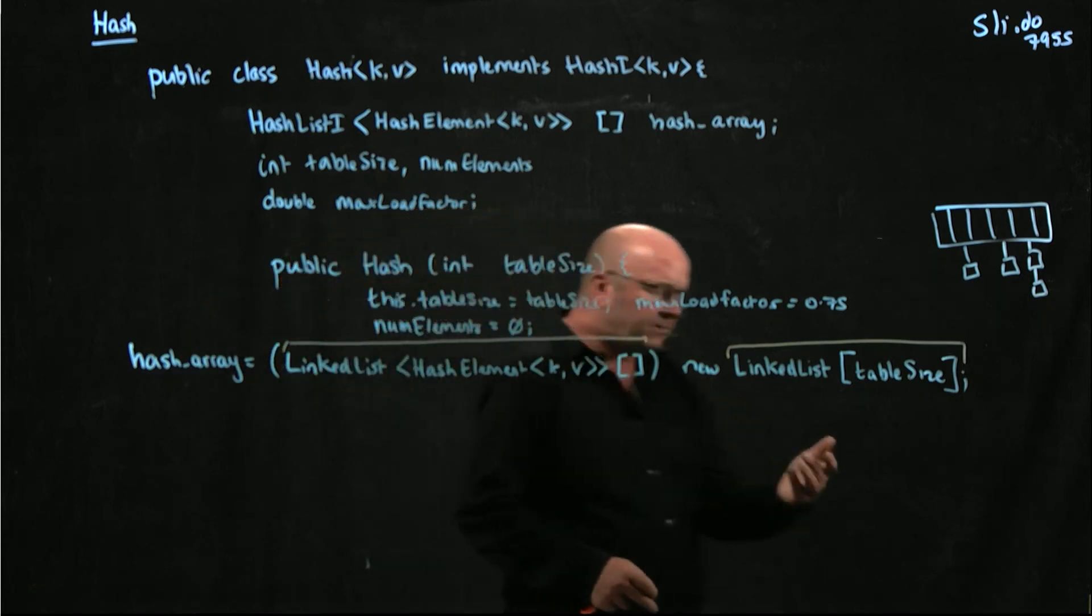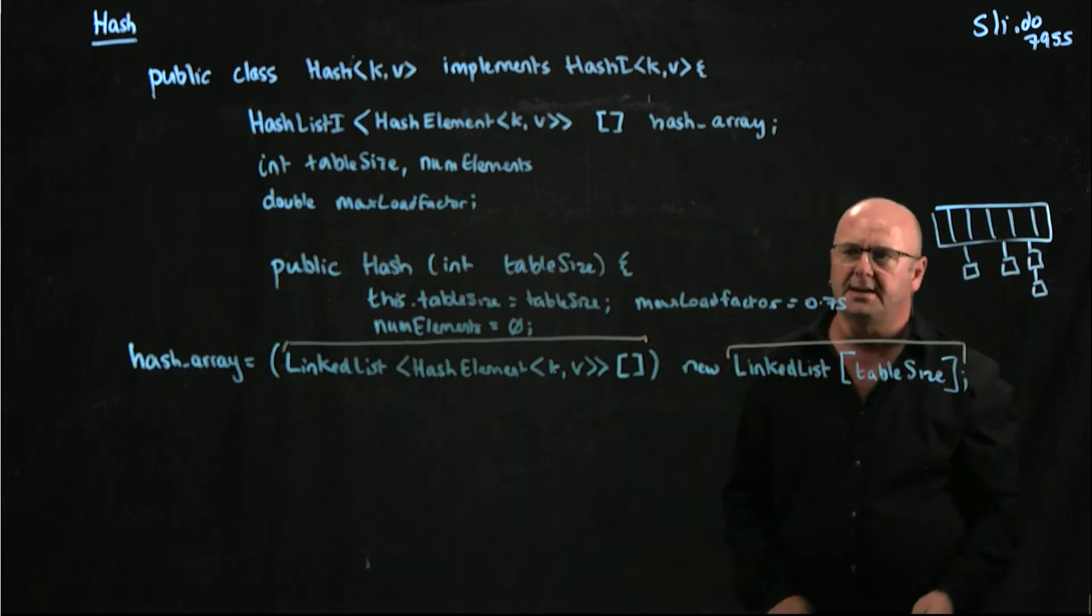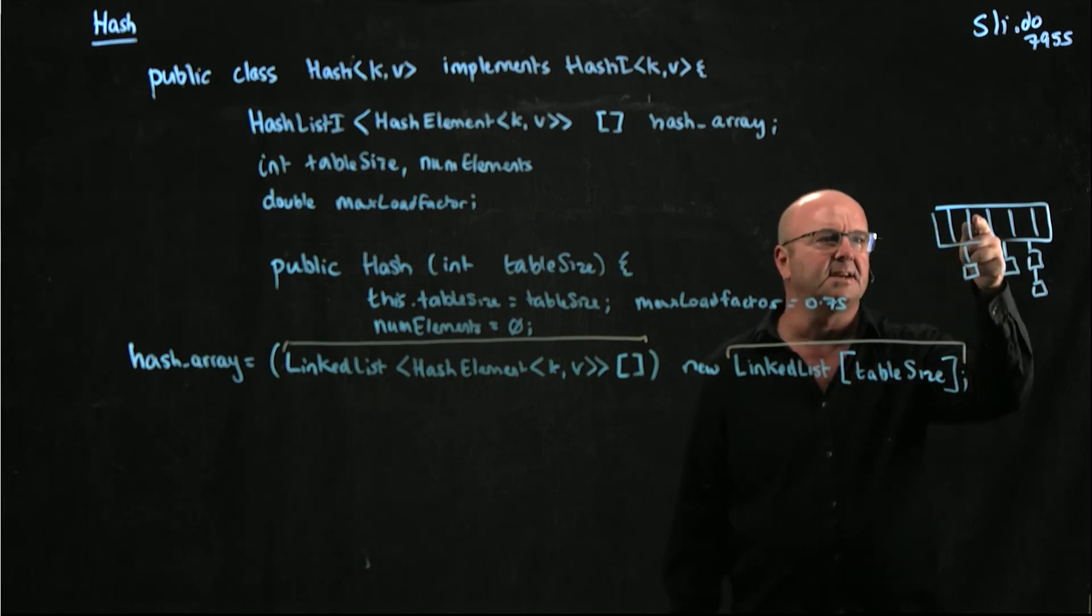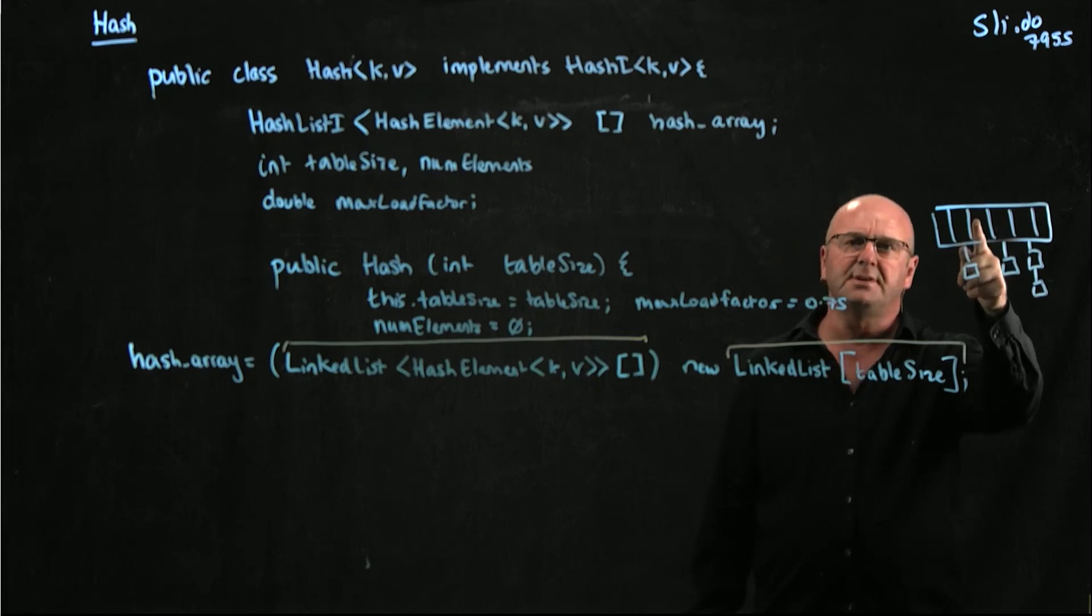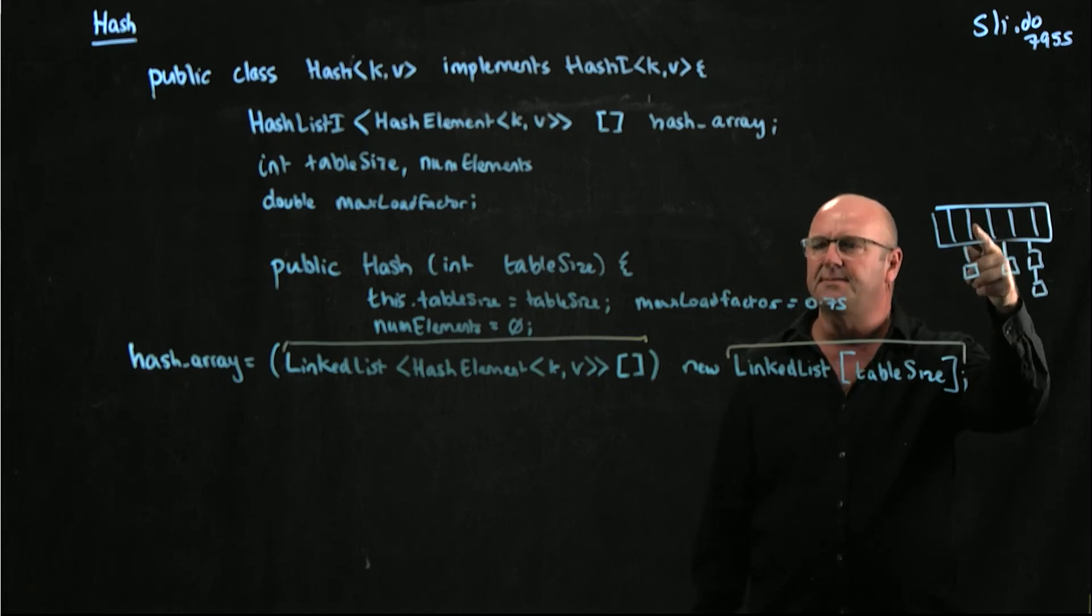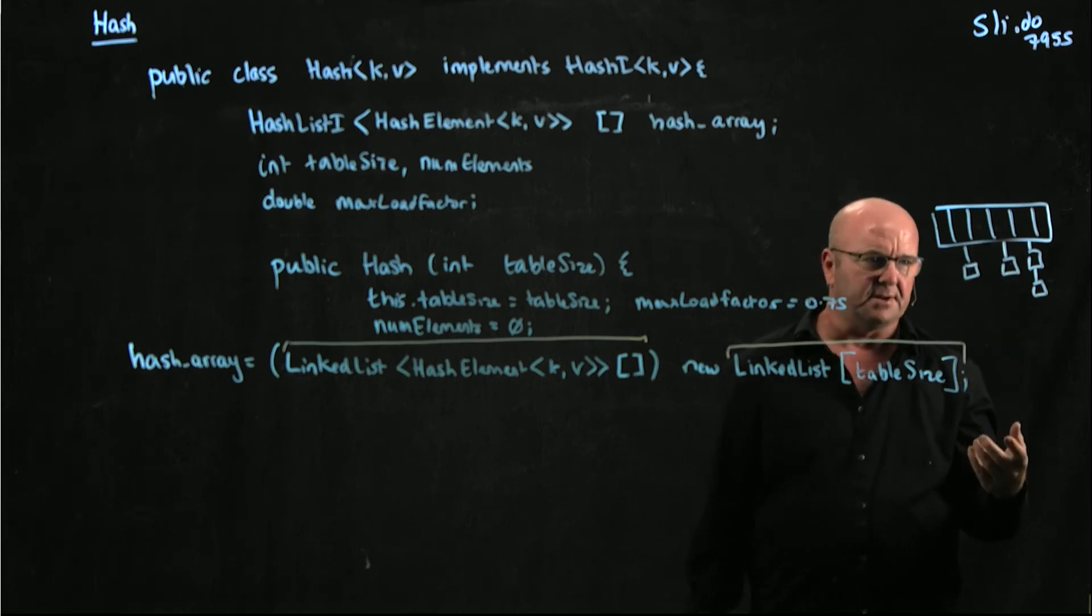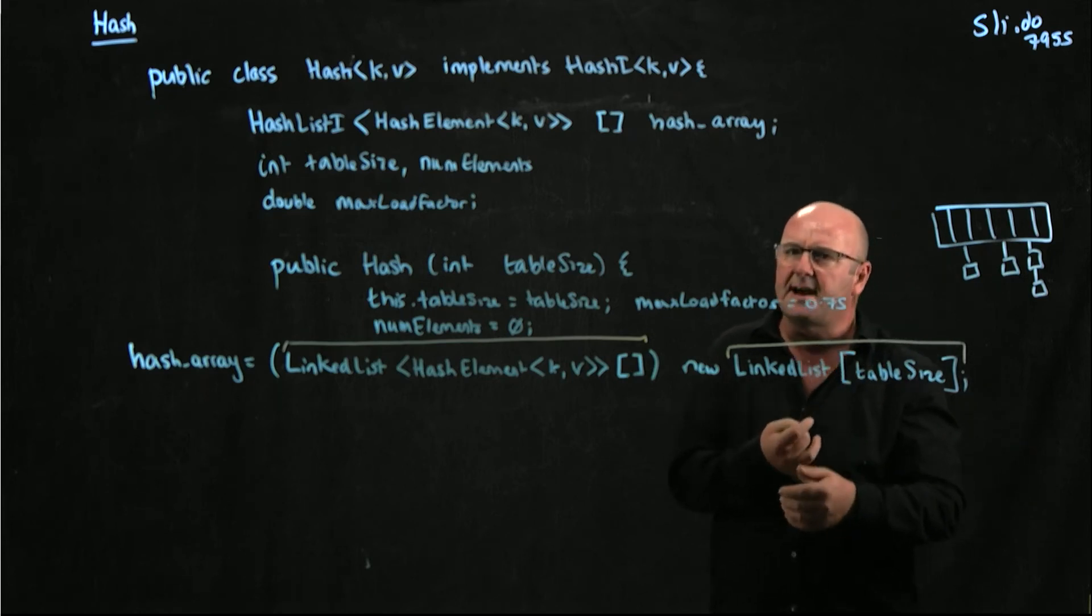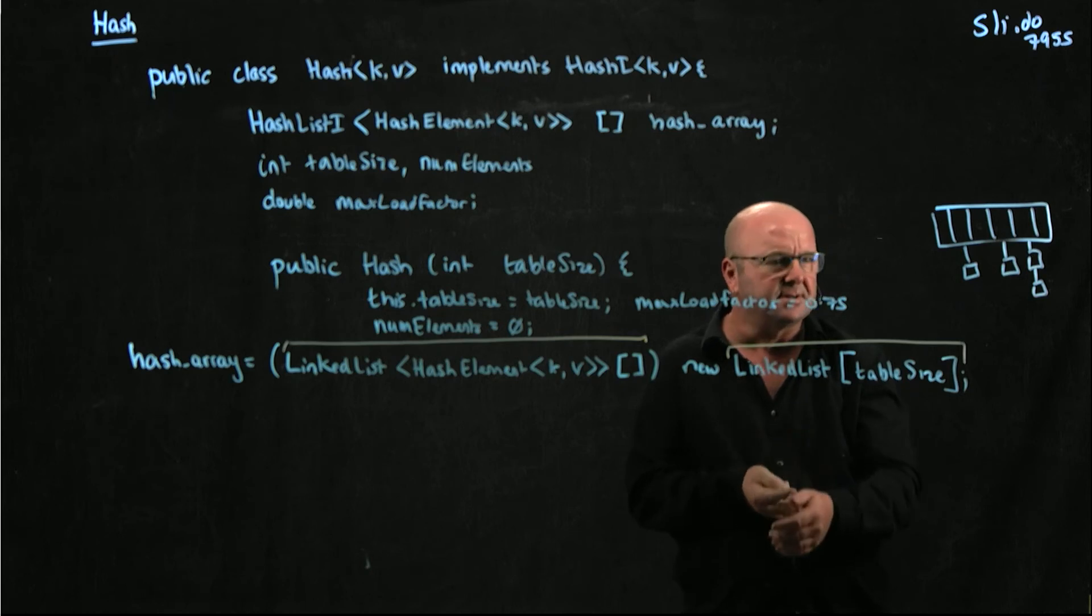And so now, at this point, we've got an empty array. And so every time you want to add something to the array, you have to go to the array and say, hey, at position two here, do I have a linked list? If I don't have a linked list, then I better make one. But that's kind of painful because you have to do that every time you do the add, every time you do the remove, every time you do the contains, every time you do anything with the data structure.